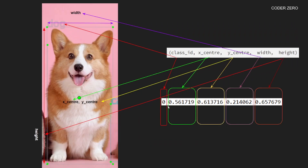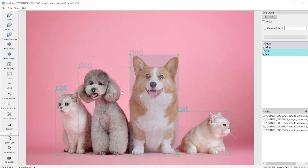If you look at the values in the annotation file: the first value represents the class ID — you can see this is dog. The second value represents the x coordinate of the centroid, which is the center of the bounding box. The third value is the y coordinate of the centroid. The fourth value is the width of the bounding box, and the fifth is the height. This is the format of YOLO annotation.